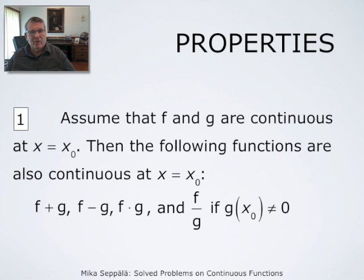Functions have the following properties. If f and g are continuous at x equals x₀, then also f plus g, f minus g, and f times g are continuous. And the function f divided by g is continuous also, assuming that g at x₀ is not zero — that is, assuming that f divided by g can be defined at x equals x₀.